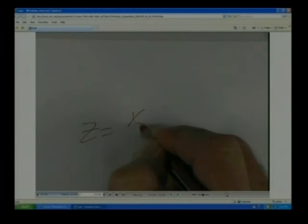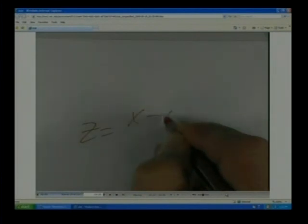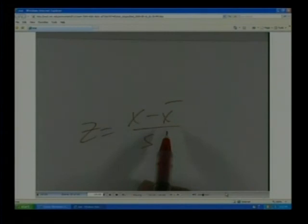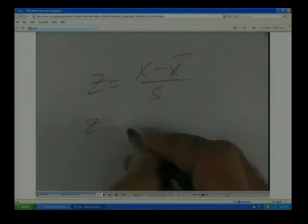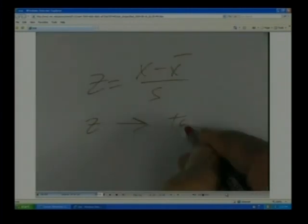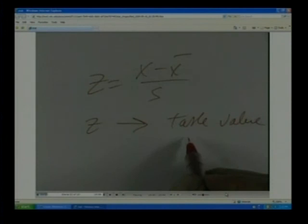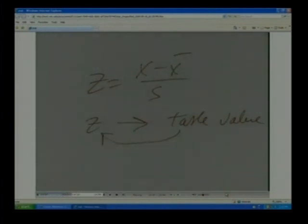Again, we had the formula: z is equal to x minus the mean over the standard deviation. If you know any three of these, you can calculate the other value. If you know the z value, then you can get the table value. Which also makes sense that if you know a table value, you can go back and calculate the z value. And this is a central concept in statistics.